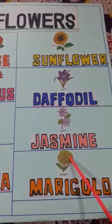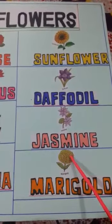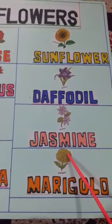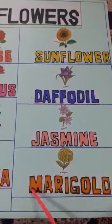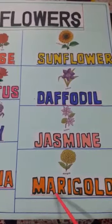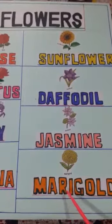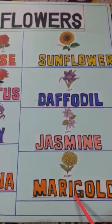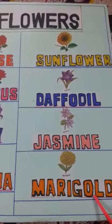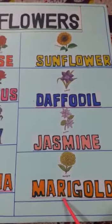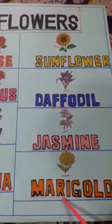J-A-S-M-I-N-E. Jasmine. This is marigold, which we get in the winter season. M-A-R-I-G-O-L-D. Marigold.